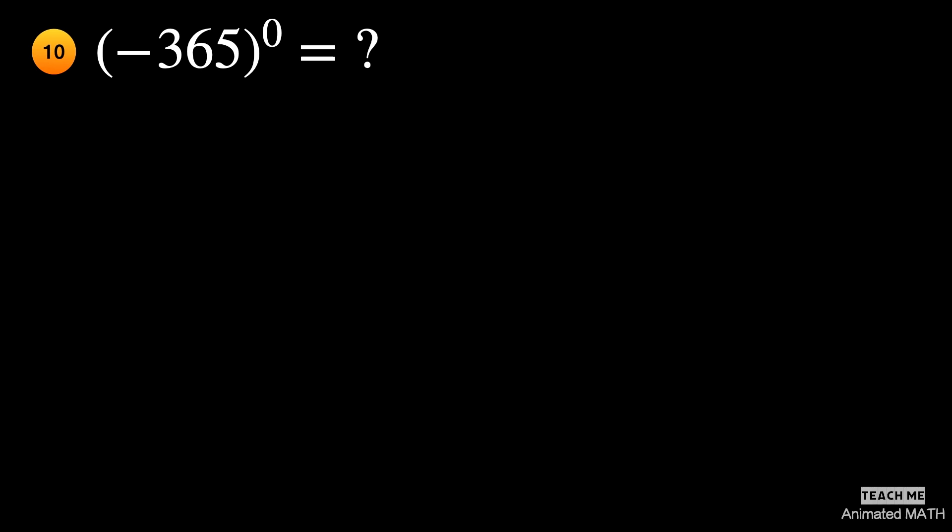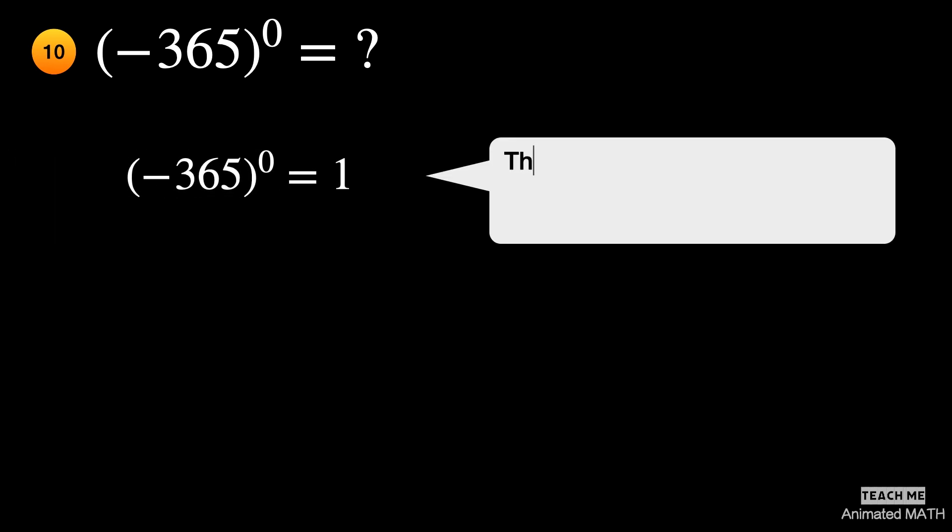Again, don't give in to the intimidation of big numbers. The base for the exponent of zero is negative 365. This means that the expression is equal to 1.